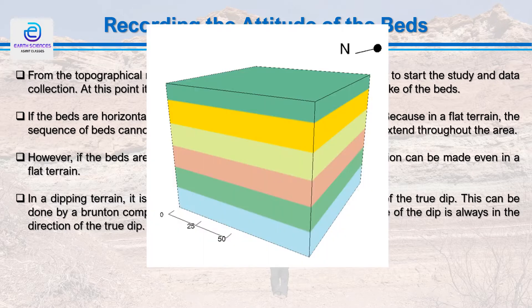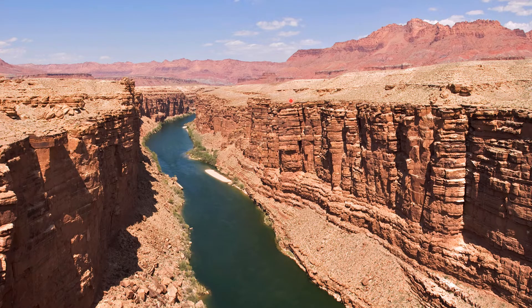If the beds are horizontal, we need to look for a ravine, gorge, or valley. Because if we are walking on a horizontal terrain composed of horizontal beds, we are going to get information of only one bed. But if we are walking in a ravine or gorge, we will have information of a number of beds. So if the beds are horizontal, it is necessary to see them in a profile view — that can be along a ravine, a curve, a road cut, or a nullah cut.